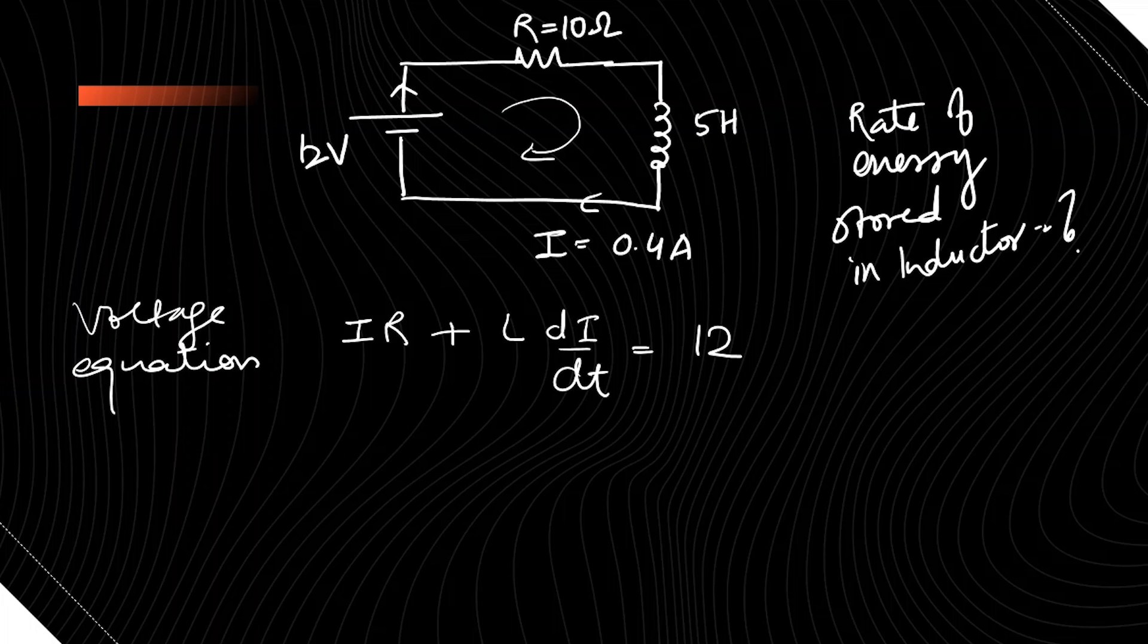So let's put the values. We are given I is 0.4, resistor is 10, plus inductance is 5 Henry di by dt. We don't know the rate of change of current, so it's 4 plus 5 di by dt is equal to 12.